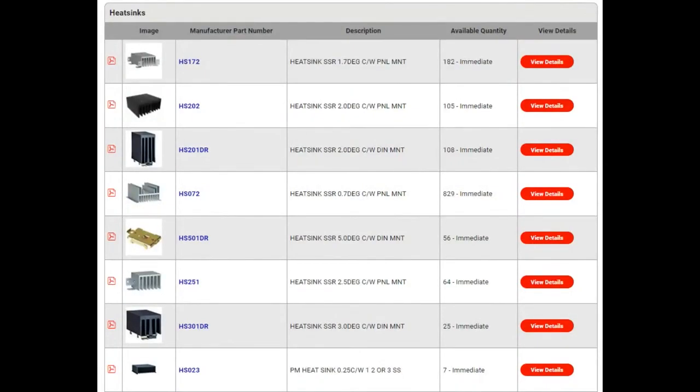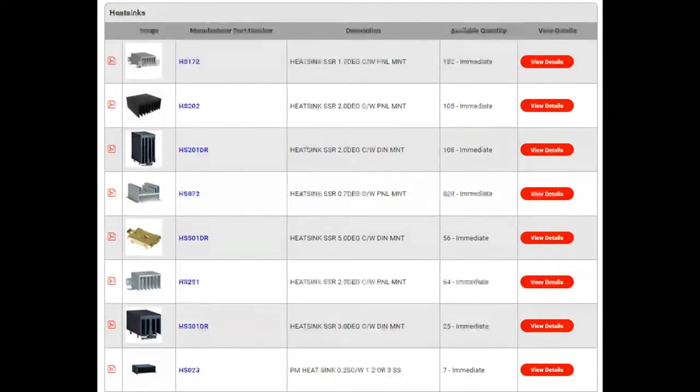So don't forget to also pick up a heat sink. And they come in different sizes for the different amount of degrees per watt. You'll need to dissipate, do the math, right? You can get away with looks like the HS172 if you're only dissipating 10 watts. But if you're doing 100 watts, maybe you'll have to check out that HS20201DR, the gigantic thing in the middle there. They're going to be more expensive, the bigger they are. And of course, they'll take up more mechanical space.